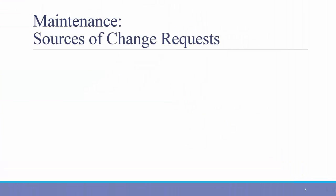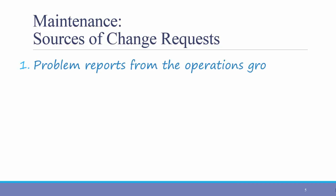Second is maintenance. There are many different sources of change requests that can lead to minor improvements in the system. First, problem reports from the Operations Group — these would be problem reports that are not resolved by Level 1 or Level 2 technicians that require a change in the underlying code or installation of the system.